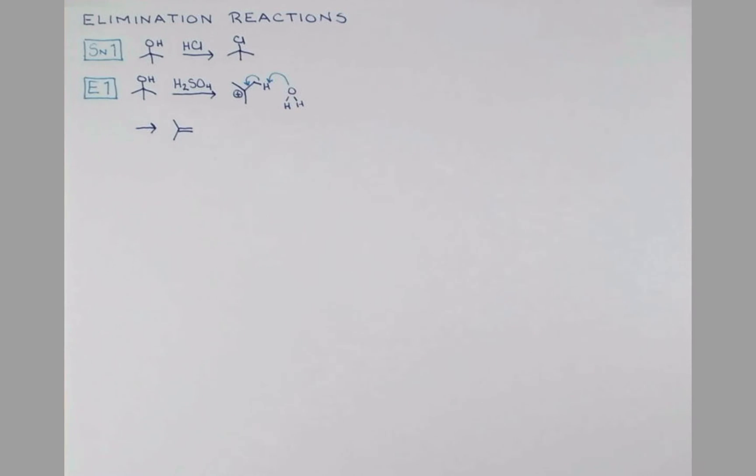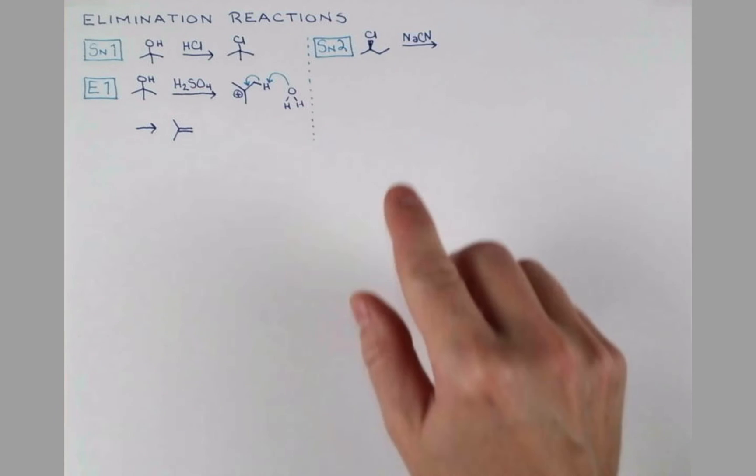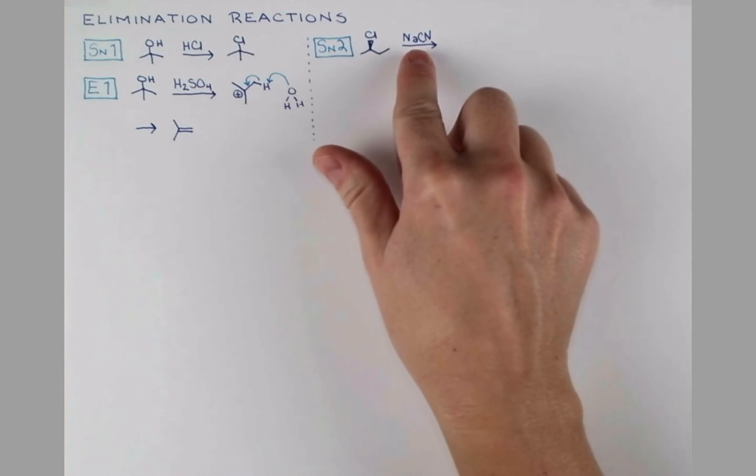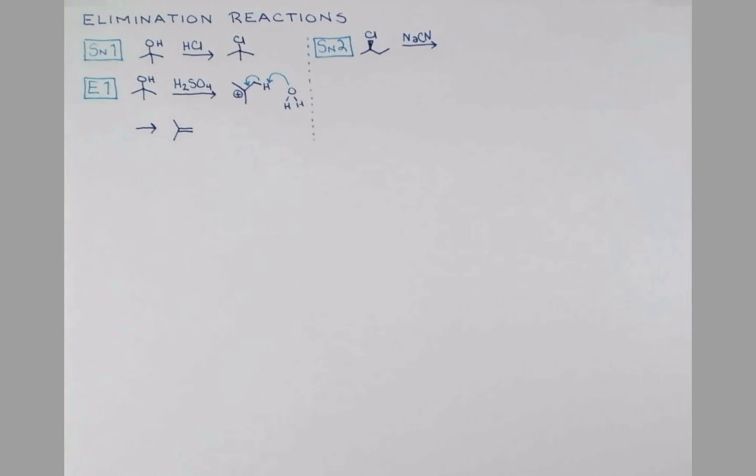Now let's review SN2 reactions. For our example, we'll start with 2-chlorobutane, treat it with sodium cyanide, and in a single step we'll get replacement of chlorine with our nucleophile CN-